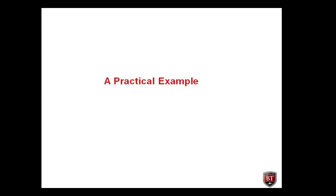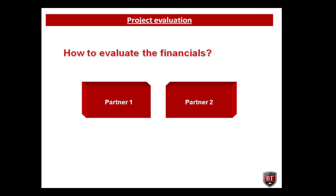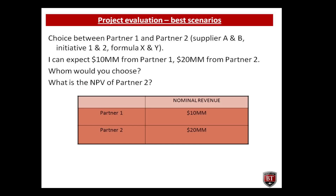Let's see a practical example of how to evaluate projects. Imagine I browse matchmaking sites and find two possible future partners. Let's call them partner one and partner two. We start dating, and it turns out I could expect 10 million from partner one and 20 million from partner two. Who would you choose?